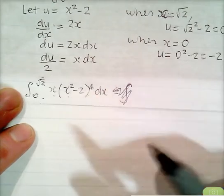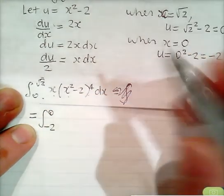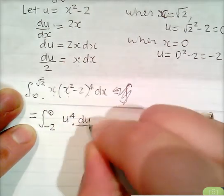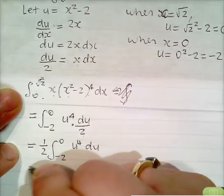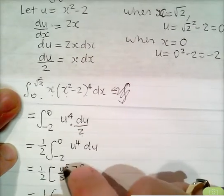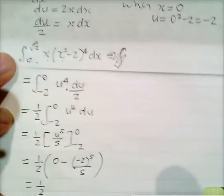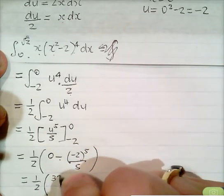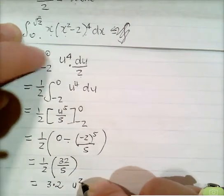The integral from root 2 to 0 of x times x squared minus 2 to the power 4 dx becomes the integral from 0 to negative 2 of u to the power 4 times du on 2. Taking out the half, we get one half times the integral from 0 to negative 2 of u to the 4 du. This gives one half times u to the 5 over 5, evaluated between 0 and negative 2. Substituting: 0 minus negative 32 on 5 gives positive 32 on 5. Multiplied by the factor of 2 from earlier gives 32 on 10, which is 3.2 units squared.